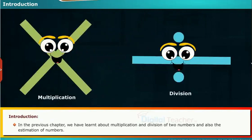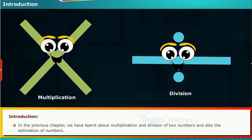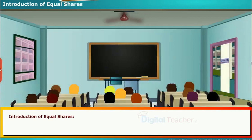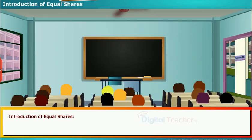In the previous chapter, we learned about multiplication and division of two numbers and also the estimation of numbers. In this chapter, we are going to learn how to divide the sum into equal shares and also how to multiply two different numbers. Let us see the introduction on equal shares and equal groups.